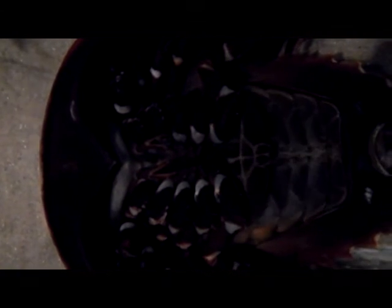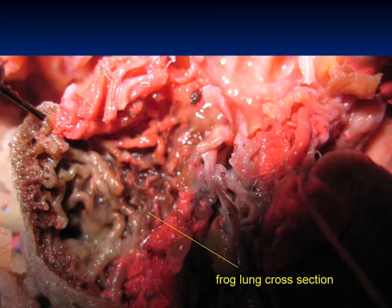A structure which forms an outward extension into water to increase the surface area is known as a gill, as opposed to an internal pocket which forms a lung.